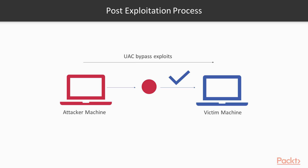After that, we take help of the UAC bypass exploits available in Metasploit, bypass the security of the victim machine, and gain access. So this is the goal of post-exploitation: to take deep access into the victim machine and get sensitive details from it.